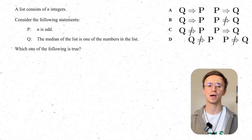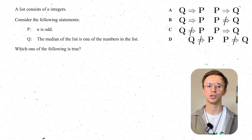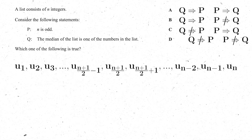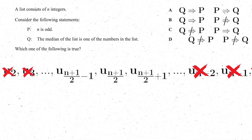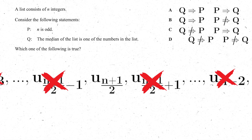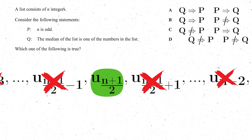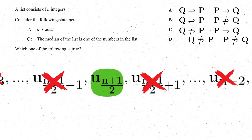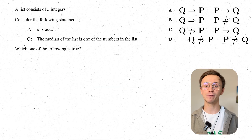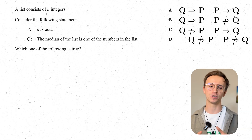First, assume p and try to prove q — that's testing sufficiency. If n is odd, does the median have to be one of the numbers? Thinking about how medians work: cancel off one from each side until you reach the middle. If n is odd, you end up with exactly one number in the middle, so the median is in the list. The only time it won't be is if there are two different numbers in the middle, which happens when n is even. So if n is odd, the median is in the list — p does imply q. We have a sufficient condition, eliminating options B and D.